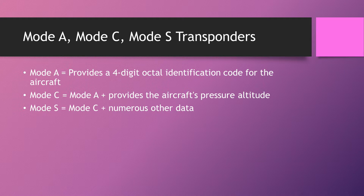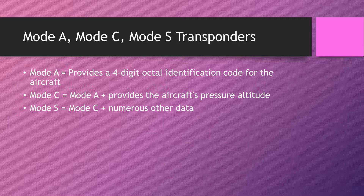A Mode C transponder is a Mode A transponder but, as well as the code, it also transmits the aircraft's pressure altitude. That's why on the sim when you're controlling, you'll see the altitude readout next to the aircraft — that's coming off the transponder.